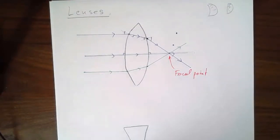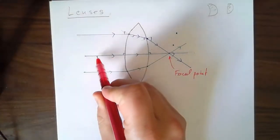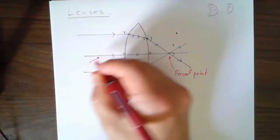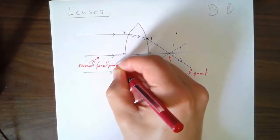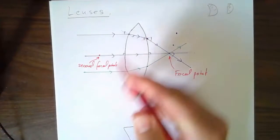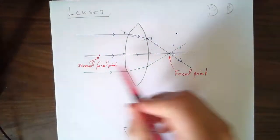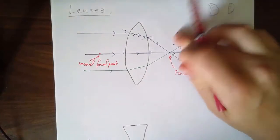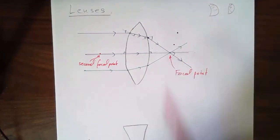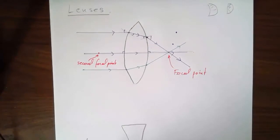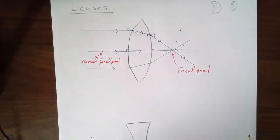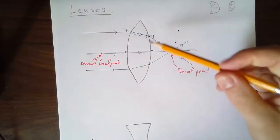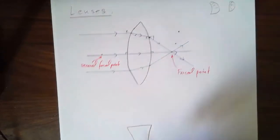So parallel rays meet at a focal point. We could have shot parallel rays from the other direction and get another focal point on the other side — a second focal point. Unlike a mirror, which only has one, lenses have two. This is the one where light rays come in parallel and meet here. We're going to assume all the light rays meet in a single point.